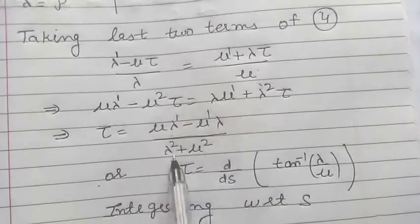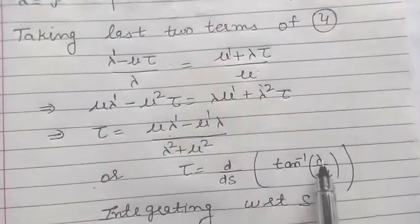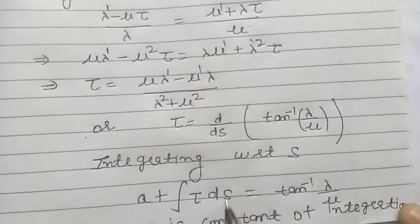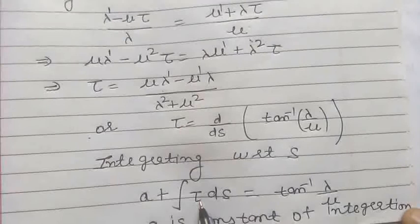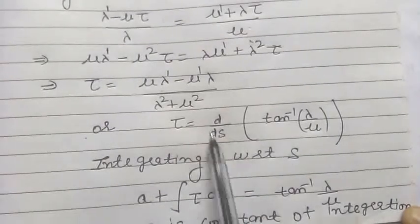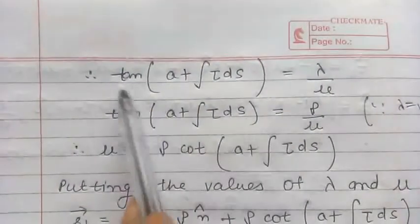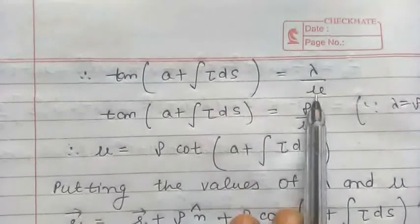By cross multiplication and combining the terms in τ, we get the value of torsion τ. This expression on the right-hand side becomes the derivative of tan inverse of (λ/μ), because the derivative of tan inverse is 1 upon (1 plus (λ/μ) squared), multiplied by the derivative of λ/μ by the division rule. So we can integrate both sides with respect to S. Integrating, we get A as the constant of integration on the left, and on the right the d/dS is removed, leaving tan inverse(λ/μ).